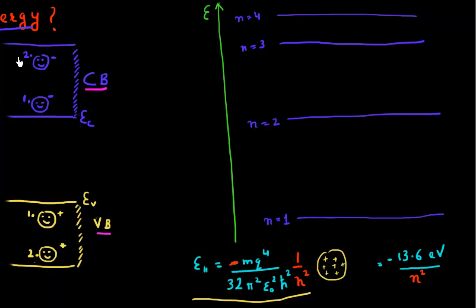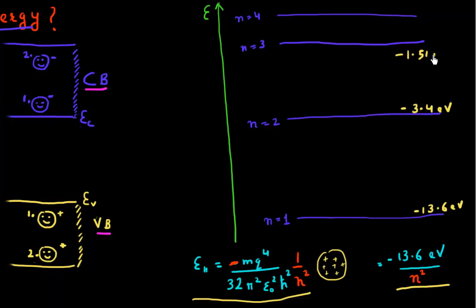For the case of a hydrogen atom, this energy is given by a simple formula. The first shell has an energy of minus 13.6 eV. For n equal to 2, this energy is divided by 4, giving minus 3.4 eV. For n equal to 3, it's minus 13.6 divided by 9, which is minus 1.51 eV. So as we increase the quantum number — moving farther from the nucleus — the energy is increasing.